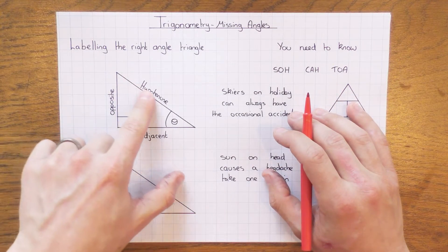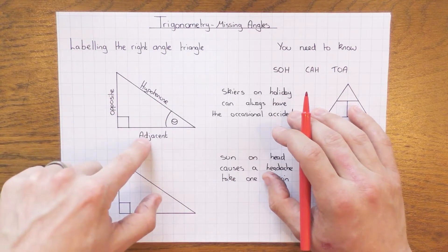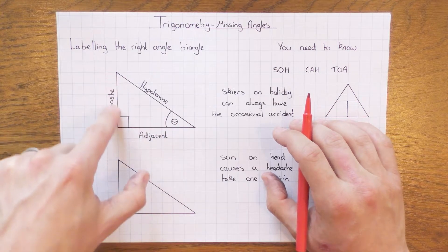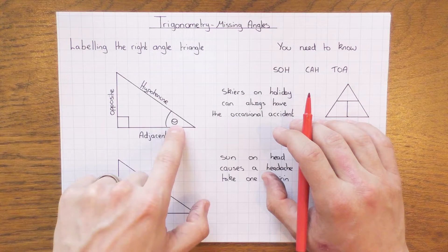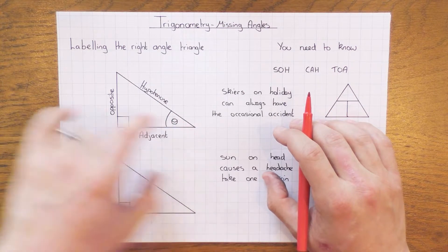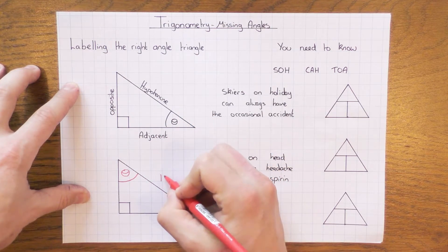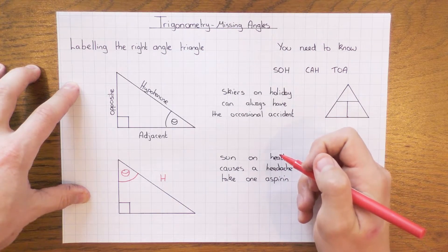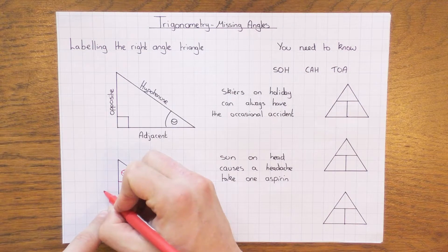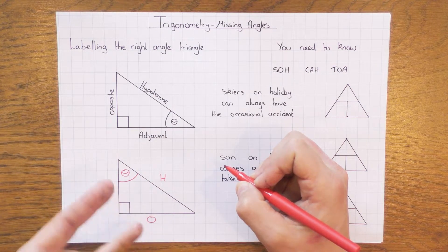The longest side, which is opposite the right angle, is always called the hypotenuse, and it's the same no matter what. These two sides change depending on the angle — theta just means an angle. This side is opposite the angle, so we call it the opposite, and this side here is next to the angle. Another word for next to is adjacent, and it's always in between the right angle and the angle. So if I move the angle theta to a different position, the hypotenuse stays the same, but the opposite and adjacent swap around depending on where the angle is.